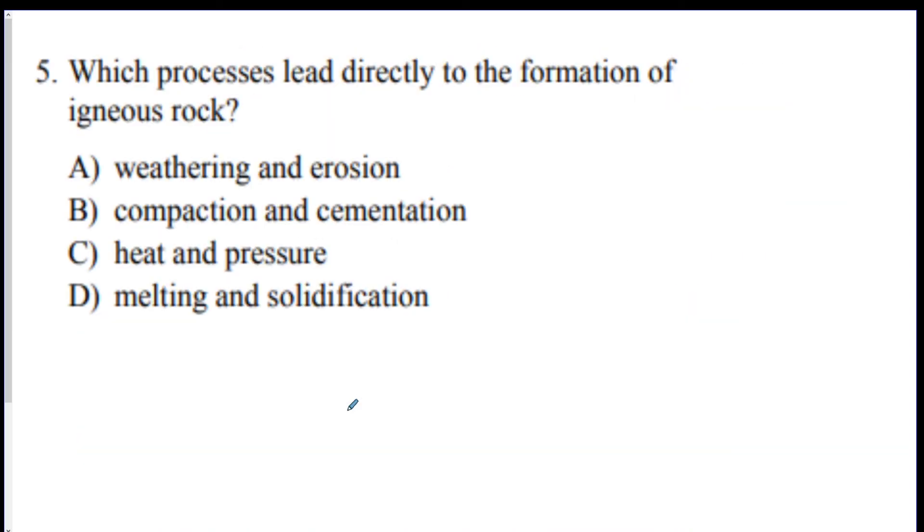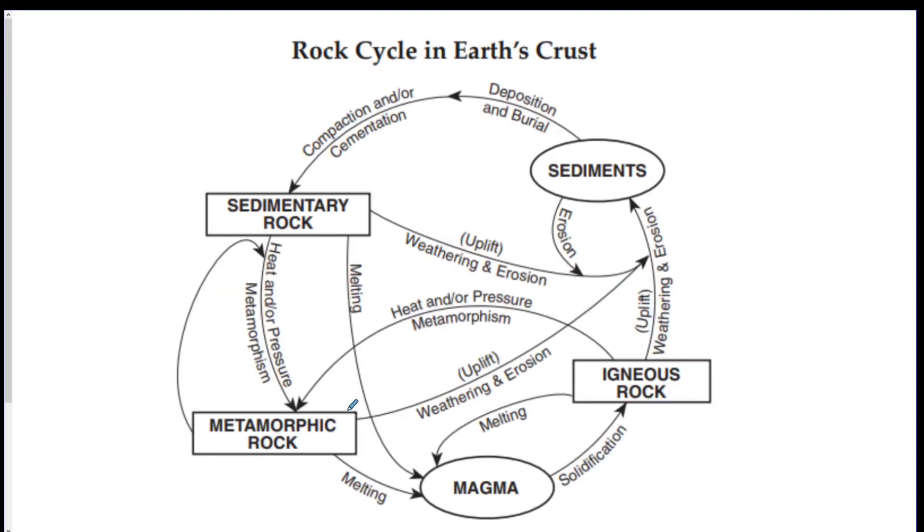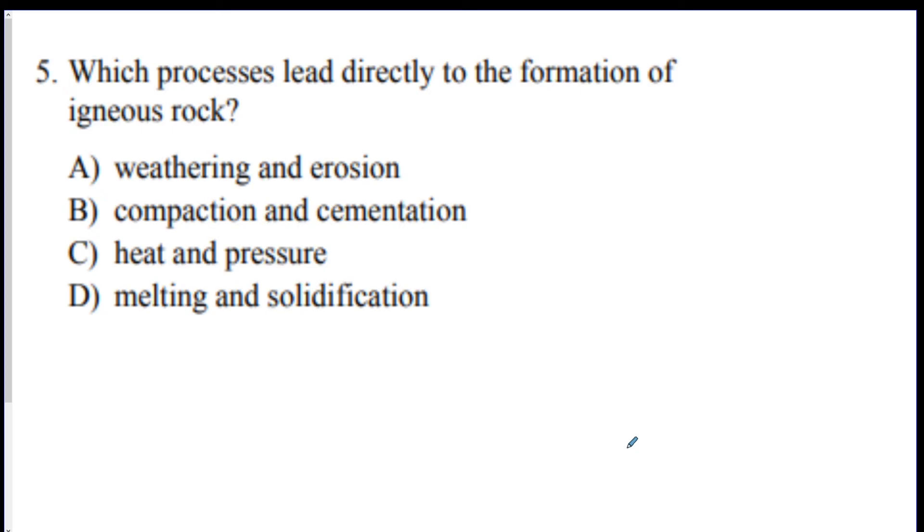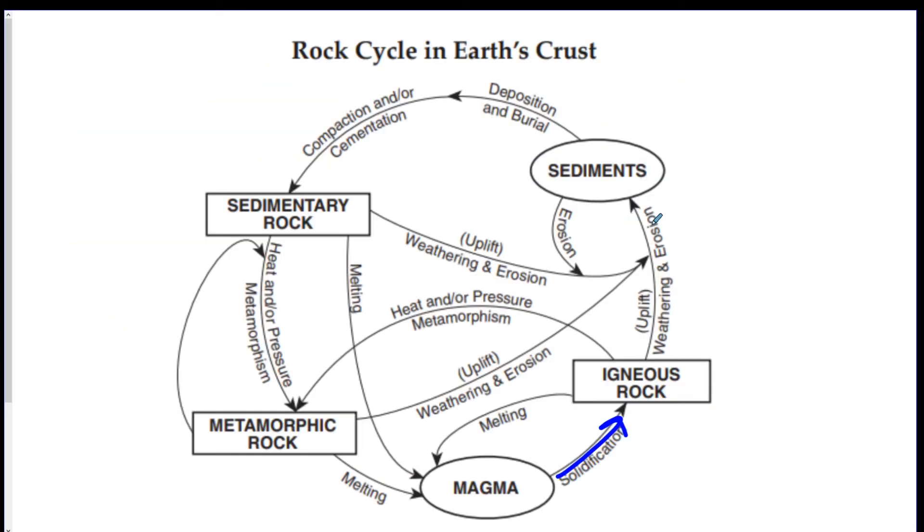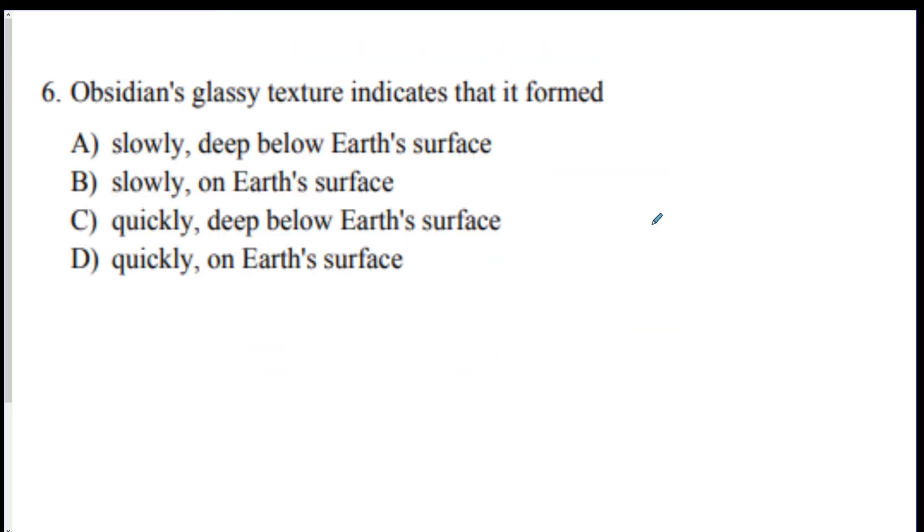Number five. Which processes lead directly to the formation of igneous rock? Check your rock cycle. Look at igneous rock. Look at the arrows that go into it. Solidification. D. Heat and pressure is metamorphic. Compaction, sedimentation is sedimentary. Weathering and erosion makes sediments. So this was all just checking that page six chart right here. It tells you all the answers here.